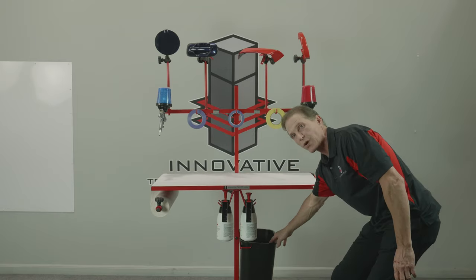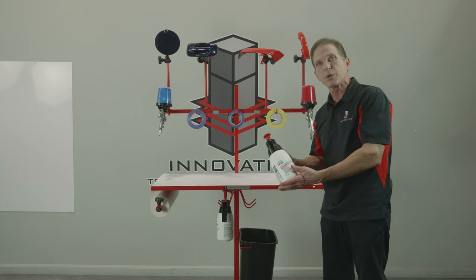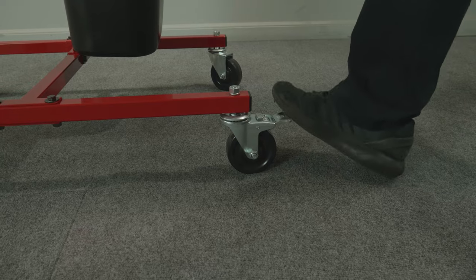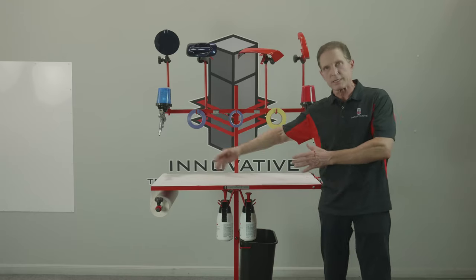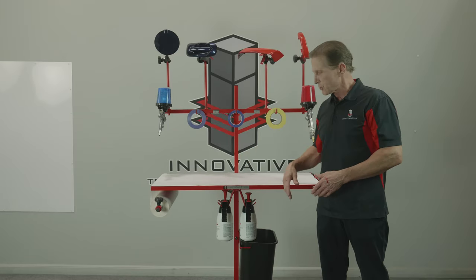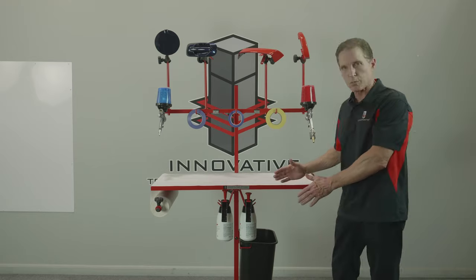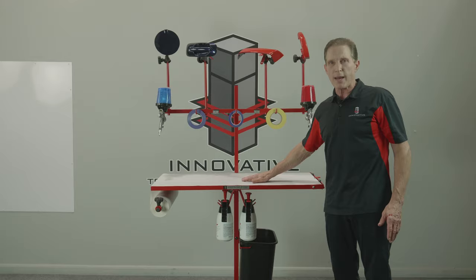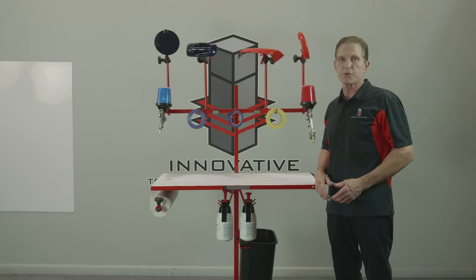It actually comes with a trash can. We've got a couple hooks here where you can keep your wax and grease removers. It also has the total lock wheel. So this is real easy to move in and out of the booth. So you just wheel it in place. Got a small footprint. Lock your wheels. It's not going to move.